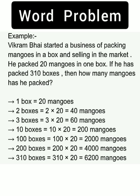Therefore, 2 boxes is equal to 2 into 20 is equal to 40 mangoes. In the same way, 3 boxes is equal to 3 into 20 is equal to 60 mangoes. Therefore, 10 boxes is equal to 10 into 20 is equal to 200 mangoes. In the same way, 100 boxes is equal to 100 into 20 is equal to 2000 mangoes. 200 boxes is equal to 6200 mangoes. Vikram bhai ne 310 boxes mein total 6200 mangoes pack ki hai. Is it clear everyone? Very good.